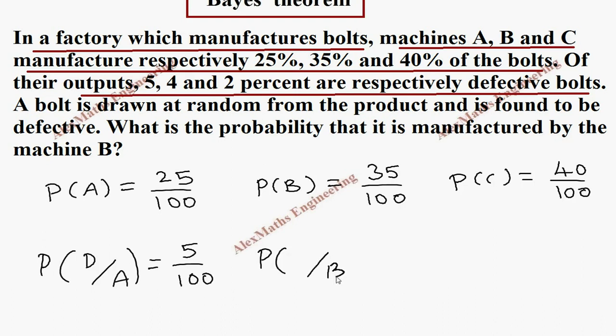In the same way, in machine B, the defective is 4 by 100. And in machine C, the defective is 2 by 100.